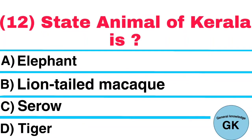Question Number 12. State Animal of Kerala is: A. Elephant, B. Lion-Tailed Macaque, C. Cero, D. Tiger. Answer: Elephant.